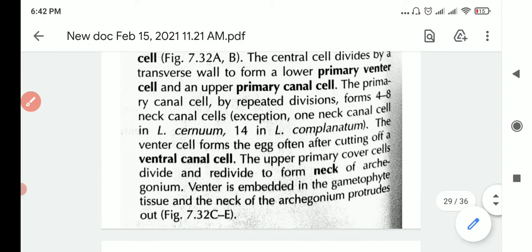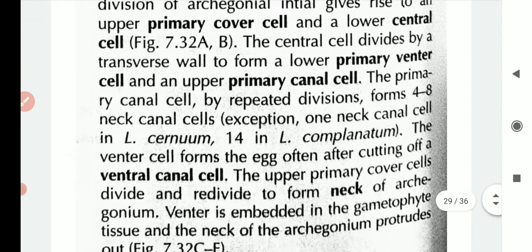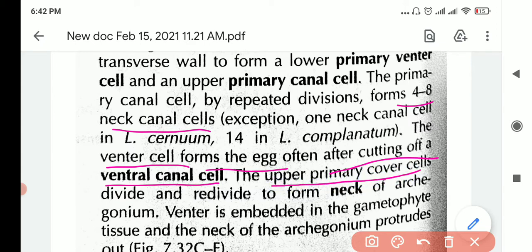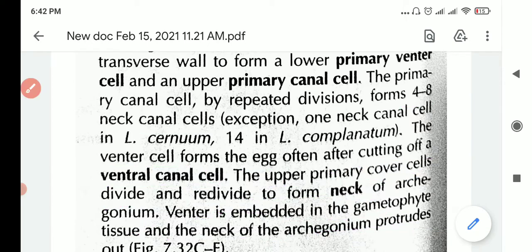So the primary canal cell will divide repeatedly and form 4 to 8 neck canal cells. Then the venter cell will form the egg after cutting off one ventral canal cell. The upper primary cover cells divide and re-divide to form the neck of the archegonium. The venter is embedded in the gametophyte tissue and the neck of the archegonium protrudes out, just like we saw in the image of the gametophyte.